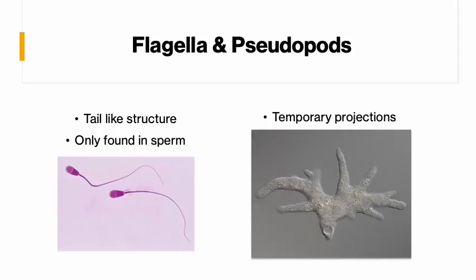Flagella is the tail, and these are only found on sperm in the human body — no other cells in our bodies have tails. It's essential to movement, making it move quickly and easily; it whips back and forth so it can swim really fast. Pseudopods are those temporary projections that a cell can grow to either grab things, attach to things, or move. They can change — they're not permanent. You can grow one, pull it back in, and grow a new one. That's why they're called pseudopods — fake fingers.